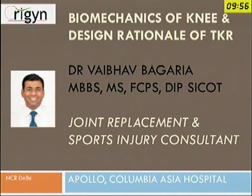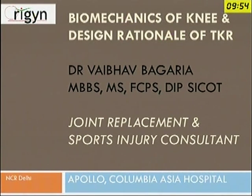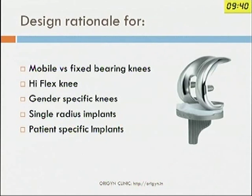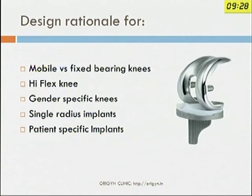In 10 minutes, we have to cover Design Rationale for joint replacements. As you might be aware, the current number of joint replacements available in the market is around 140. I would just be touching briefly on the main available groups: mobile versus fixed bearing knees, high flex knee, gender specific knee, single radius implants, and patient specific implants.